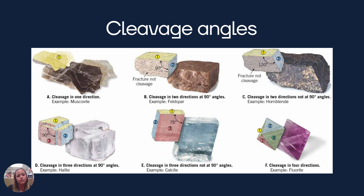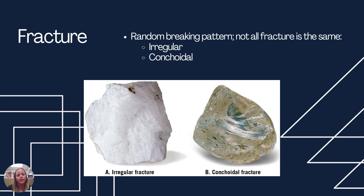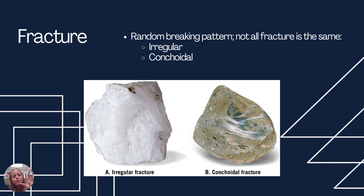If the minerals are not exhibiting cleavage, they are going to fracture, which is just random breaking — there's no rhyme or reason to it. There are two different types: irregular and conchoidal. With conchoidal fracture, we see hairline fractures within the surface in concentric circles. This is going to be seen in something very glassy, like large-scale quartz or obsidian. But a lot of what you're going to see is irregular fracture, and in quartz you'll see the conchoidal fracture.